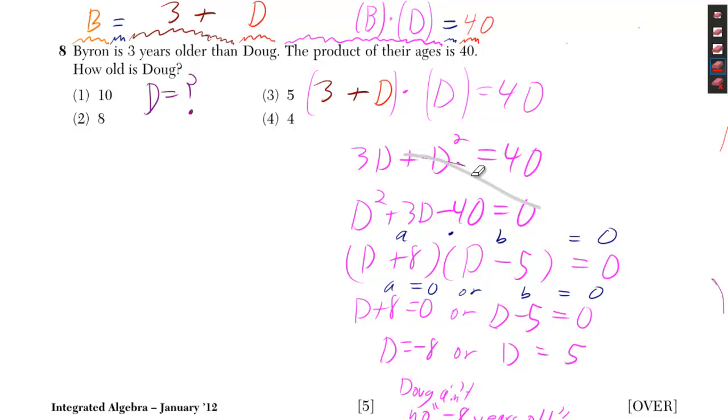Well, let's replace B by three plus D. That's what we got over there. And then we still keep D, and it's still equal to 40.